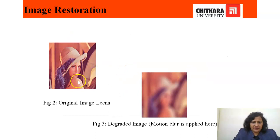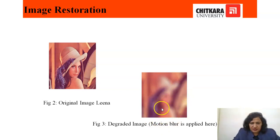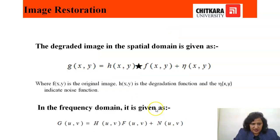For example, I have taken the example of the LENA image. This is the original image LENA which is degraded through motion blurring. This blurring may be due to atmospheric, environmental, or any other reason — it can be corrupted or degraded. So our main objective is to get the original image from this degraded image.